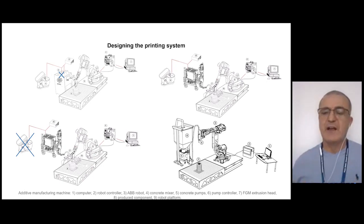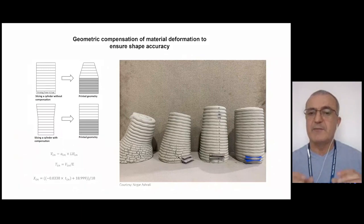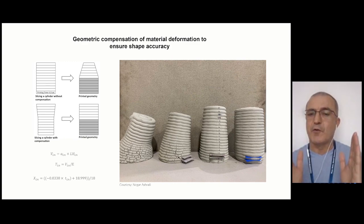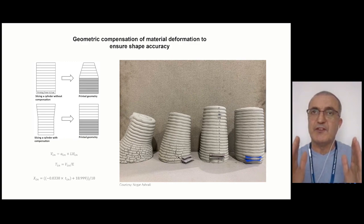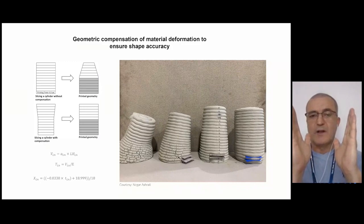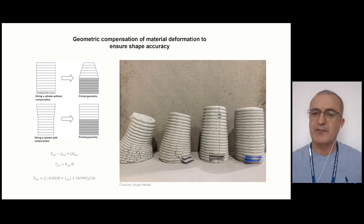You need to understand how the material behaves after extrusion. Because concrete takes time to set and harden, it deforms under the weight of subsequent layers until it hardens enough to hold its shape. So if you design and print a cylinder, it will deform and you will end up with a truncated cone or it might collapse. What you need to do is compensate for this deformation through geometric compensation — if you want to print a cylinder, you deform the design into an inverted cone, print it, and it will acquire the desired shape.